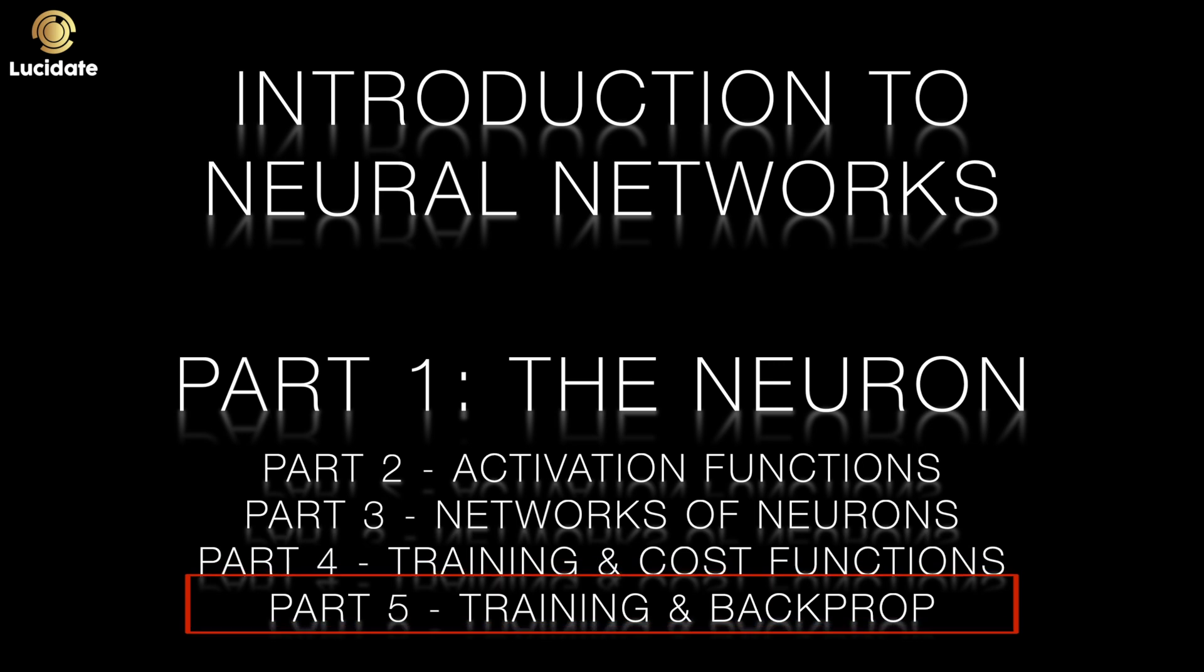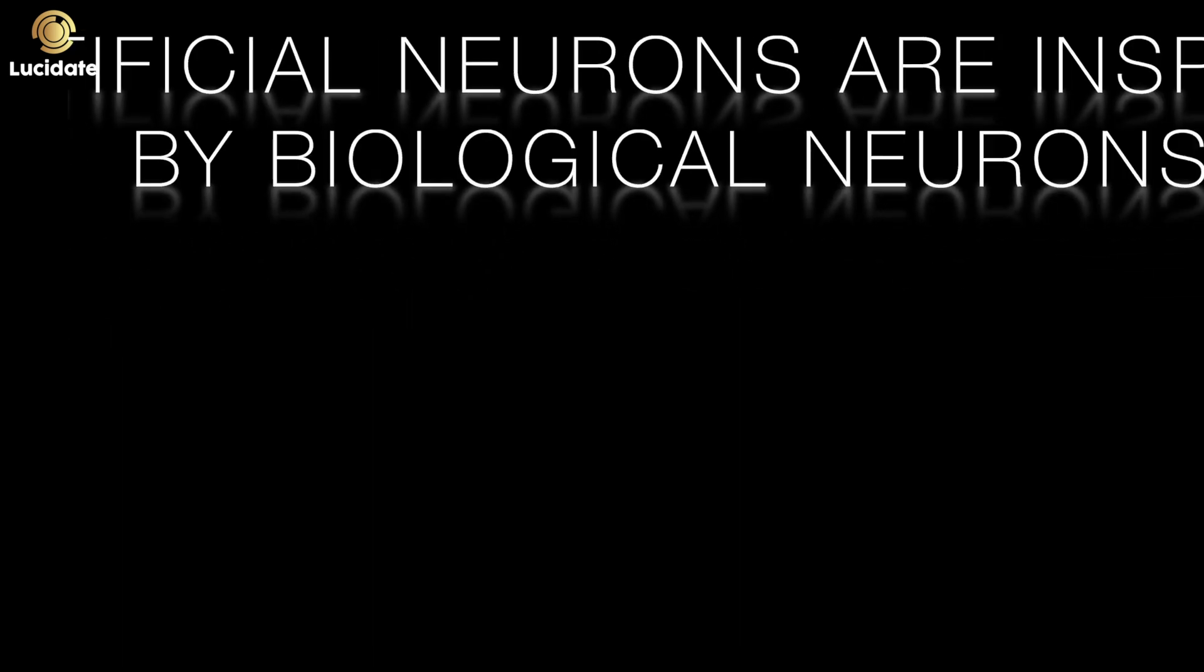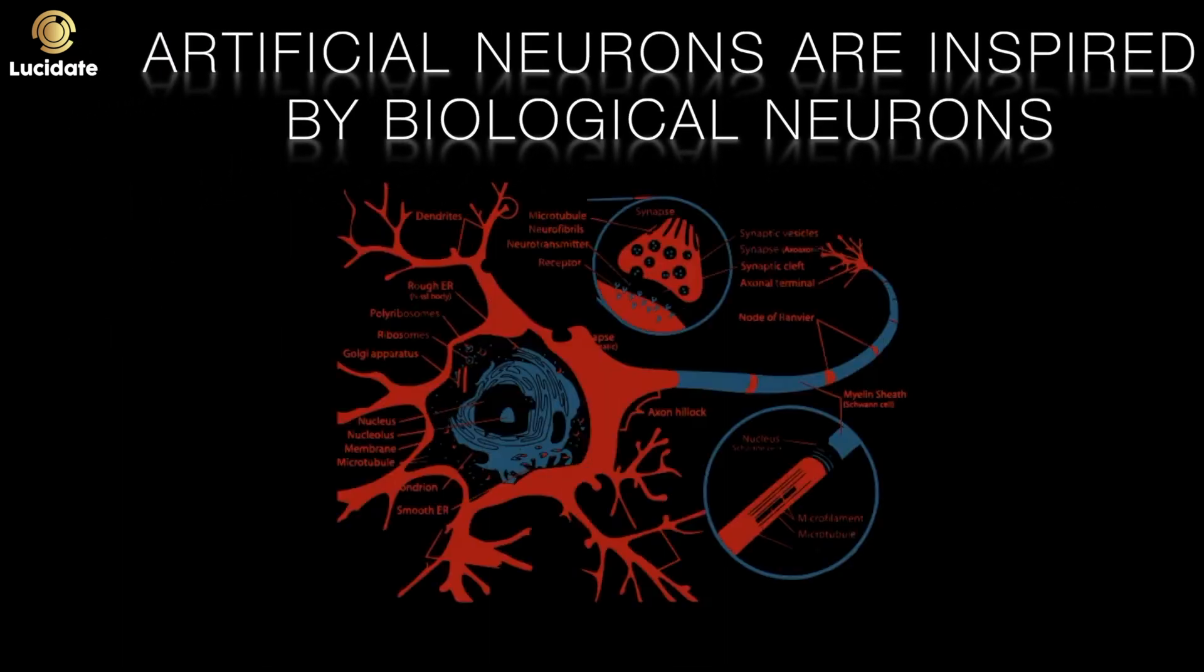We conclude this session on training in part five with a discussion of back propagation. This is a term used to describe how a network updates its parameters when it's being trained to get better at its assigned task. So let's start at the most basic level of neural networks. Let's look at what an artificial neuron is.